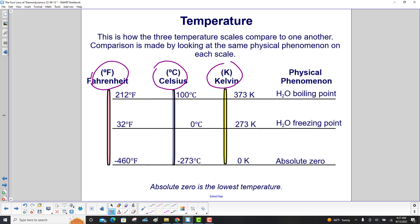Comparison is made by looking at the same physical phenomena: water's boiling point, water's freezing point, and absolute zero, which is the lowest temperature. At boiling, we have 212 Fahrenheit, 100 degrees Celsius, and 373 Kelvin. At freezing, the values correspond to the calibration points discussed. Absolute zero can be determined by extrapolation.